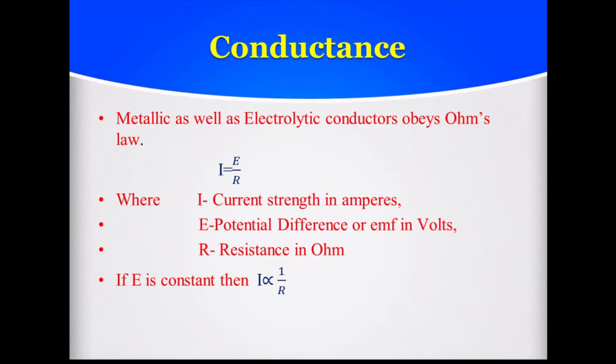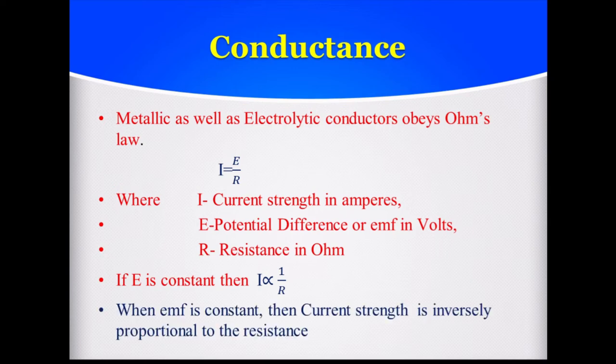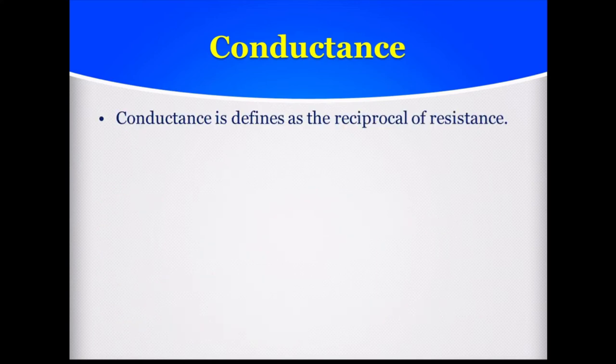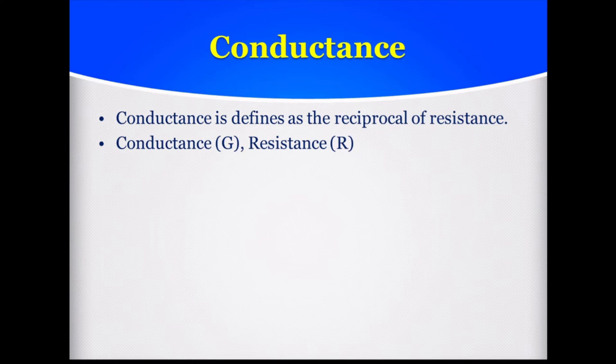If we consider E to be constant, then I is inversely proportional to 1/R. In other words, when EMF is constant, the current strength I is inversely proportional to resistance. Therefore, conductance is defined as the reciprocal of resistance. Conductance is denoted by capital G and resistance by capital R, so G = 1/R.